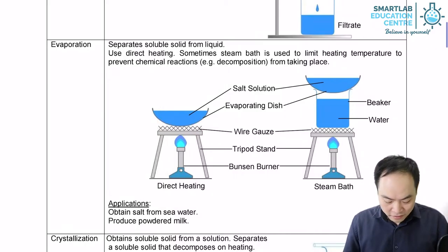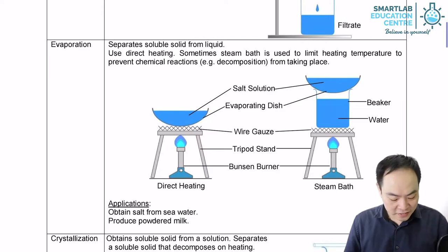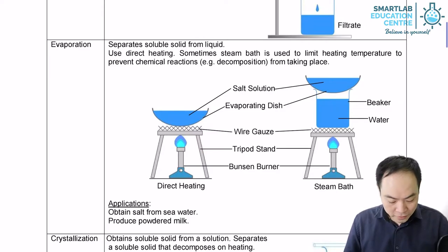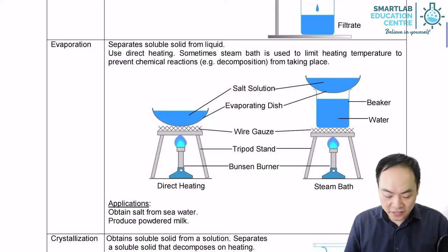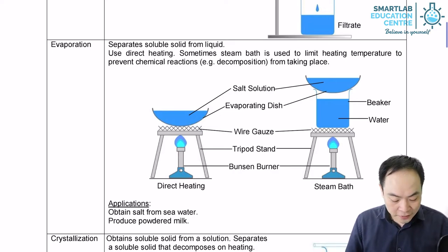Evaporation is a method to separate a dissolved solid from a solution by heating the solution to dryness. This method is used if the dissolved solid is a heat-stable substance, meaning that the substance will not decompose upon strong heating.